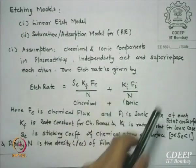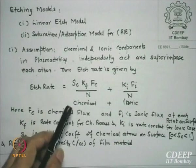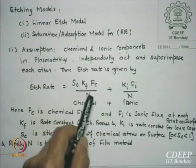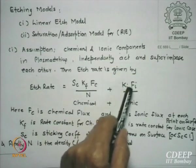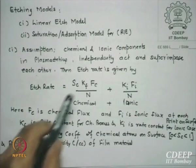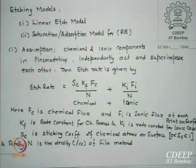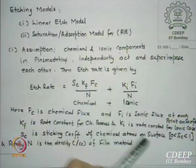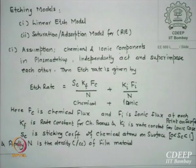This model can be derived, and what I wrote down is: etch rate SC equals KF times FC divided by N, plus KI times FI divided by N. F stands for flux in all cases. FC is the available chemical gas flux — number of atoms per unit area per unit time, decided by the gas pressure inside. KF is the rate reaction constant due to chemistry — the reaction rate between the species and the substrate being etched.